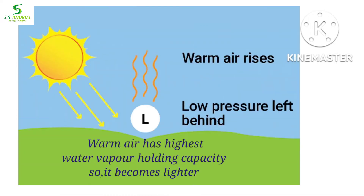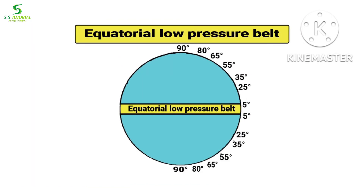Warm air has a higher water vapor holding capacity, and as warm air has less density it becomes lighter. This warm and lighter air expands and rises, and forms a low pressure belt which is known as the equatorial low pressure belt.